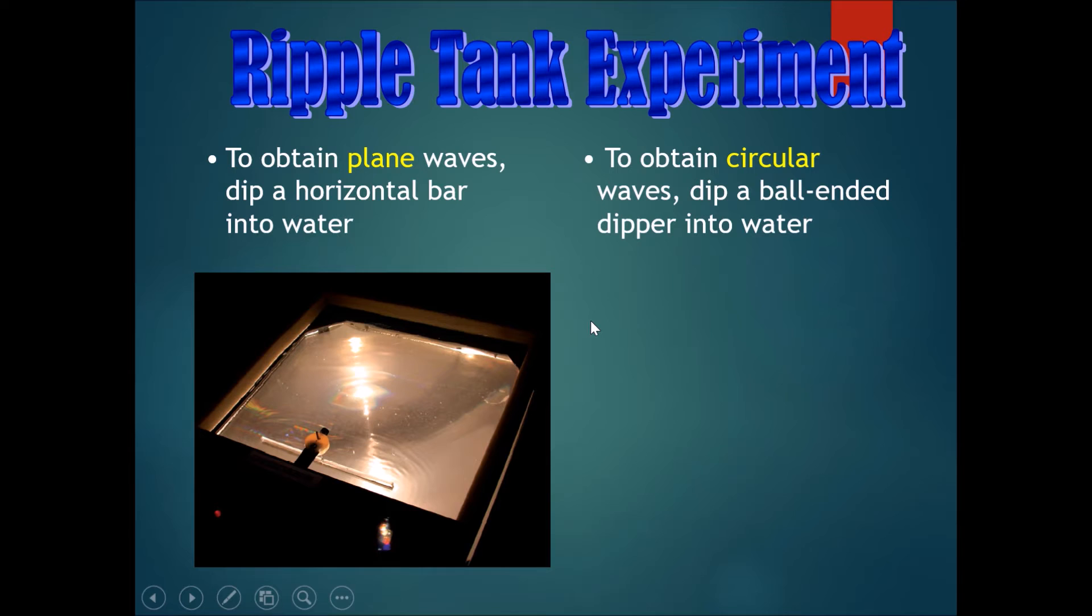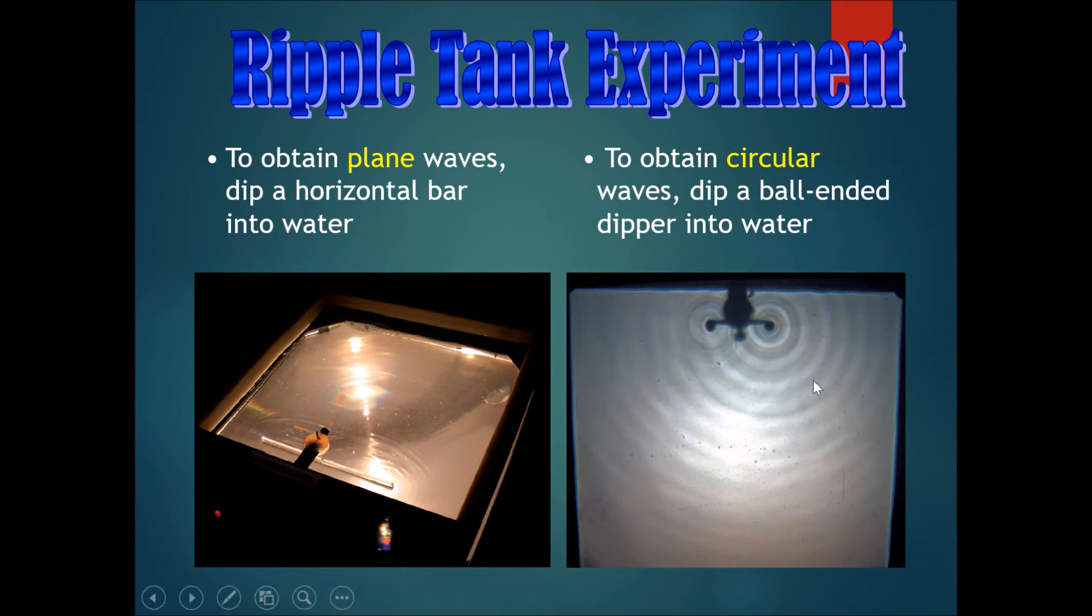Now, if you want to obtain circular waves, you should dip a ball and a dipper into water. You can see that this is a ball that is vibrating up and down, into and out of the water, and therefore it's producing these circular waves, which are radiating outwards. Therefore, you can also see here the wavefront examples.